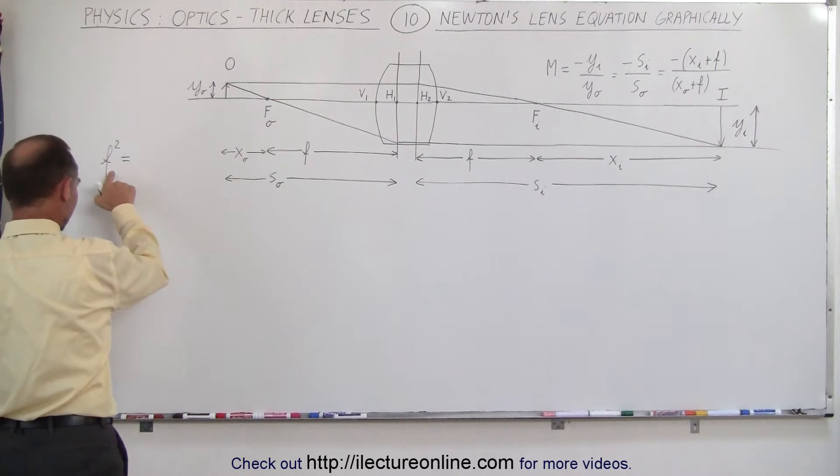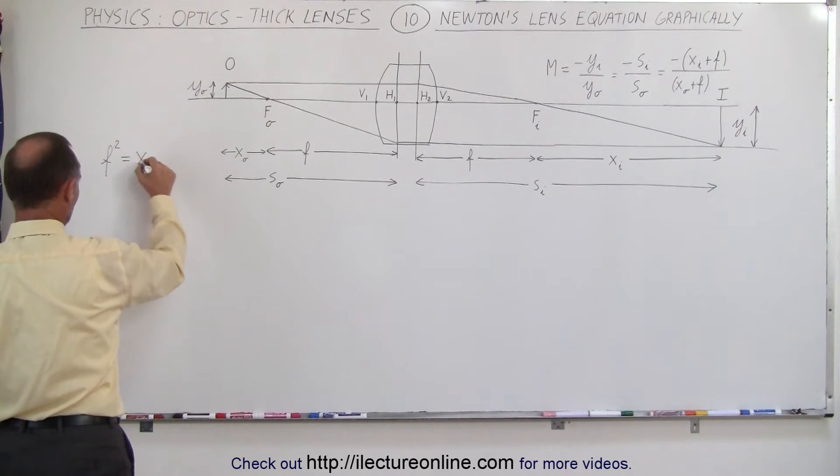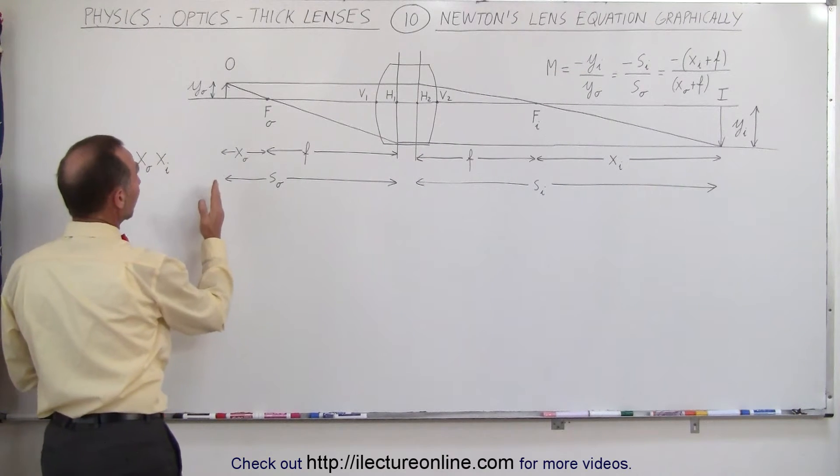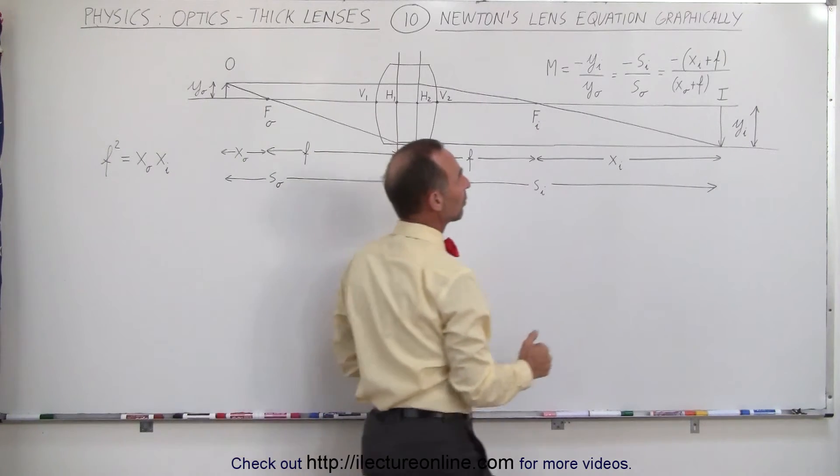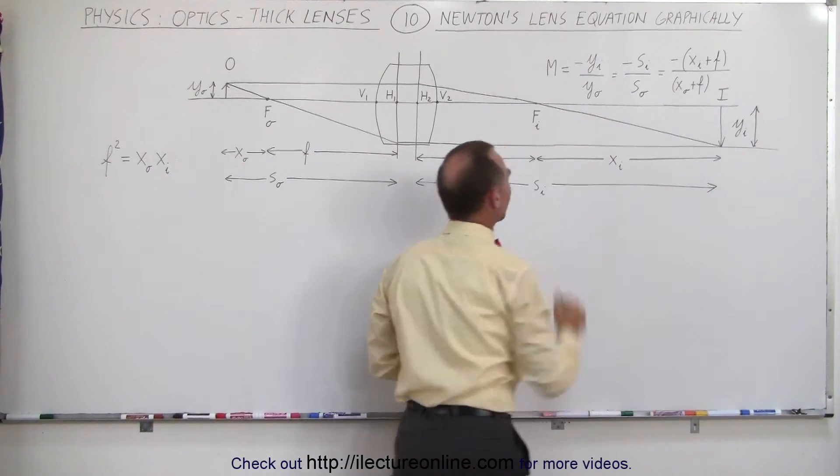We talked about how focal length squared is equal to the product of x sub O times x sub i, where x sub O is the distance from the object to the focal point and x sub i is the distance from the image to the focal point.